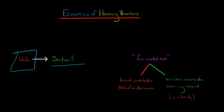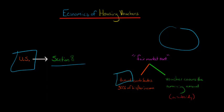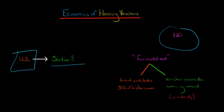The way that Section 8 works is this: for a given neighborhood, you assess what is the fair market rent for that neighborhood, and then the tenant contributes 30% of his or her income toward the fair market rent. Let's pretend that the fair market rent for a neighborhood was $1,200 and that 30% of the tenant's income is $400. So that $1,200 fair market rent minus the $400 that the tenant pays leaves a shortfall of $800.